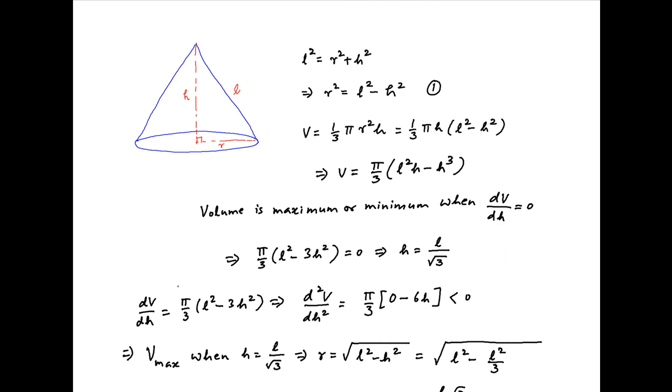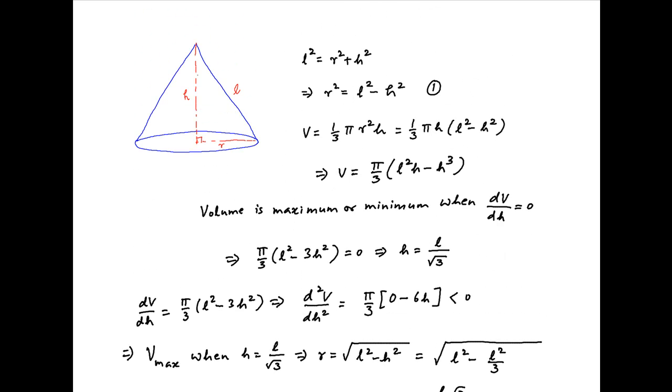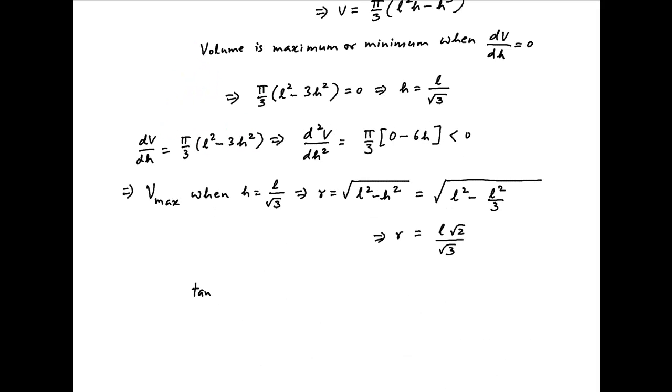Now if α is the semi-vertical angle of the cone, then tan α = R/H. For the cone with maximum volume, this equals (L√2/√3)/(L/√3). The L/√3 cancels, so tan α = √2, or α = tan⁻¹(√2) for the cone with maximum volume, which is the required answer.